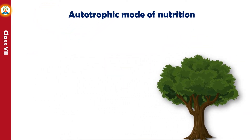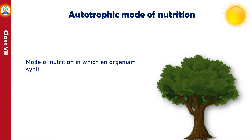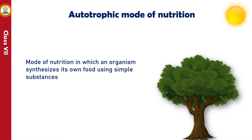The mode of nutrition in which an organism synthesizes its own food using simple substances is called autotrophic mode of nutrition. Organisms that exhibit this kind of nutrition are called autotrophs. The green plants are autotrophs as they prepare their own food using carbon dioxide, sunlight, water and minerals. They are called producers as they produce food for other living organisms.